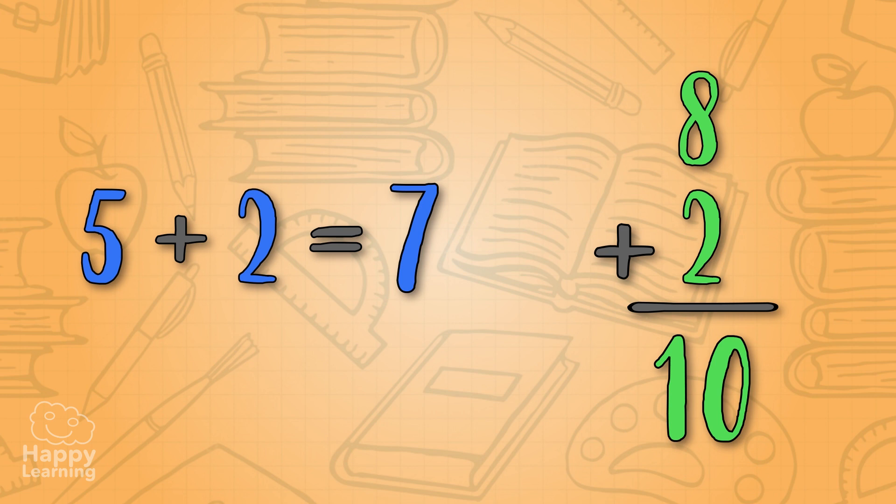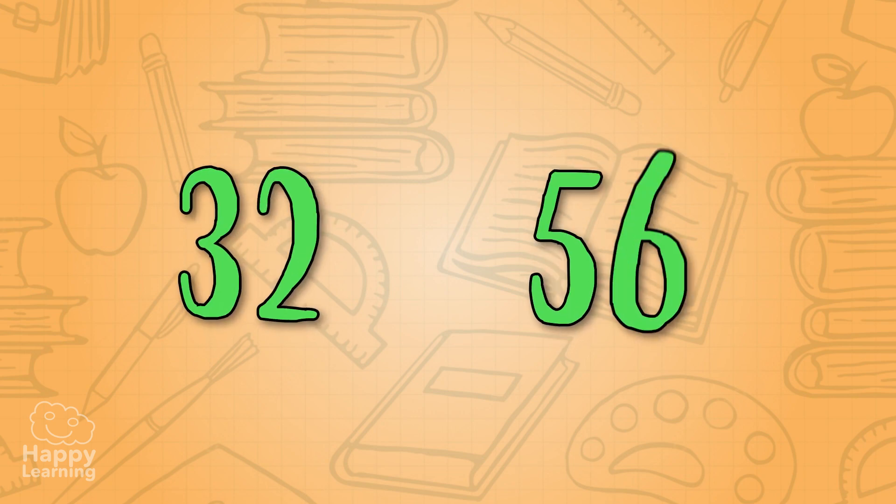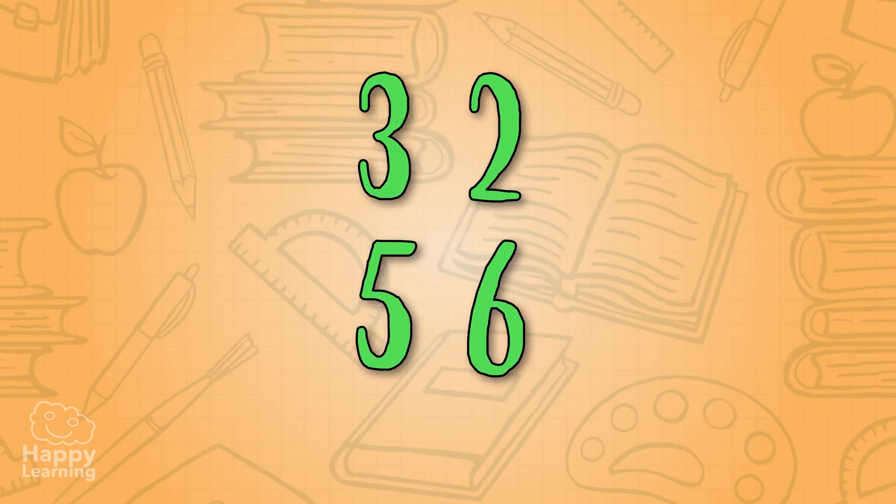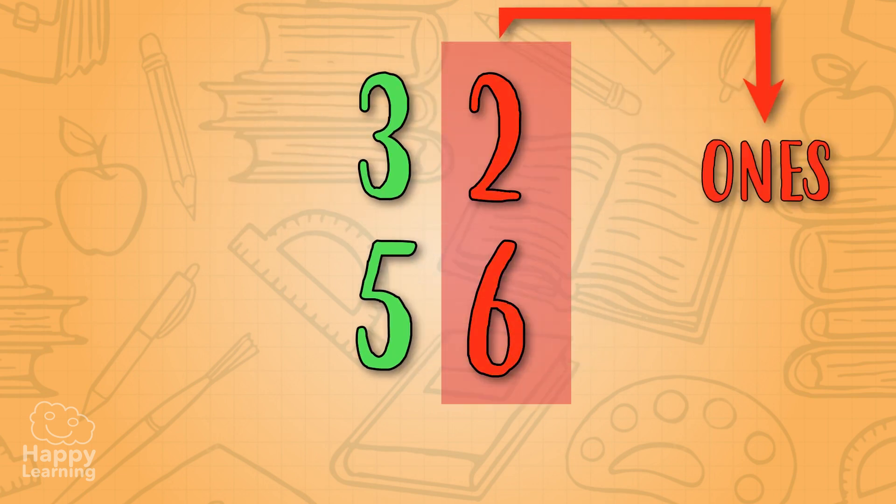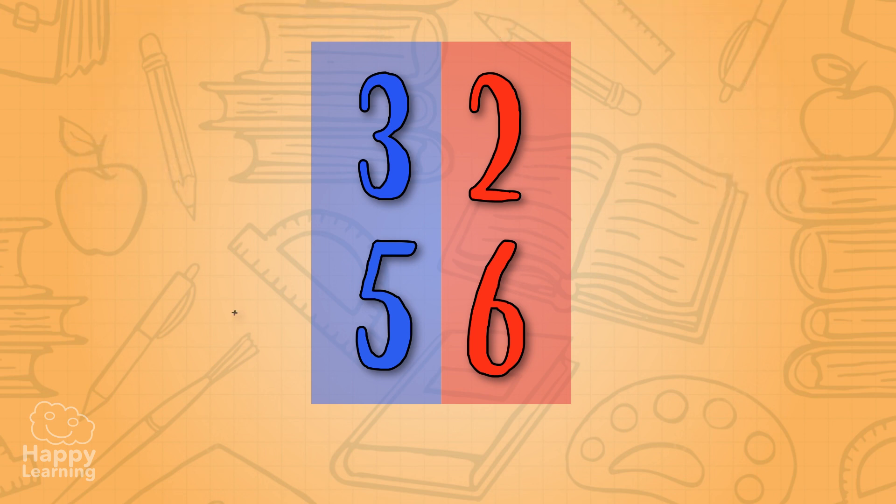To add larger figures, such as 32 plus 56, we place one summand under the other. Ones under ones, and tens under tens, like this! Then we add a plus sign.